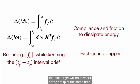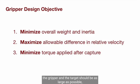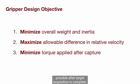At the same time, general objectives for the gripper systems include: The overall weight and inertia should be minimized. The maximum allowable difference in initial relative velocity between the gripper and the target should be as large as possible. And the combination of gripper and target should impose payload torque as small as possible after target acquisition is complete.